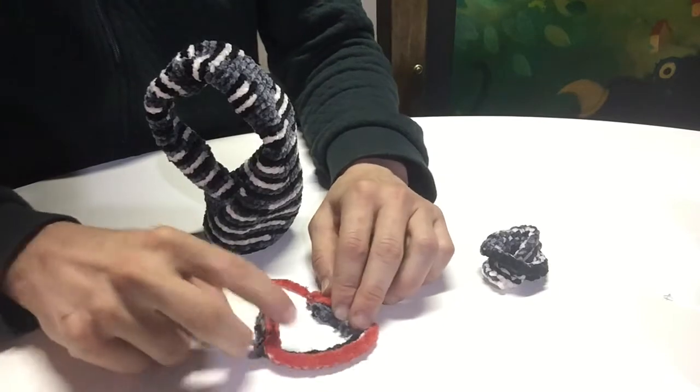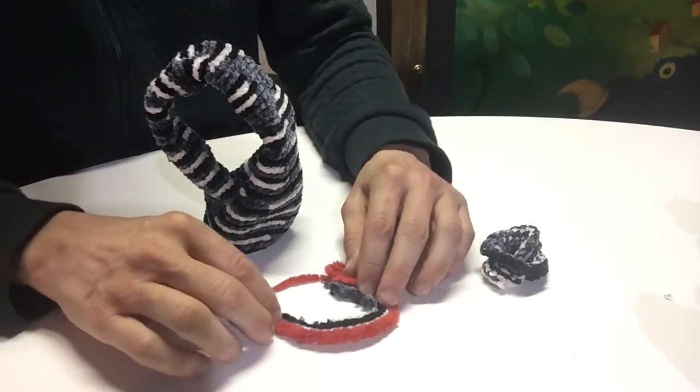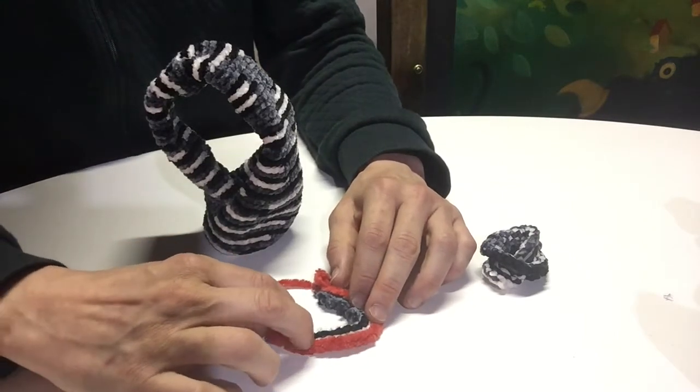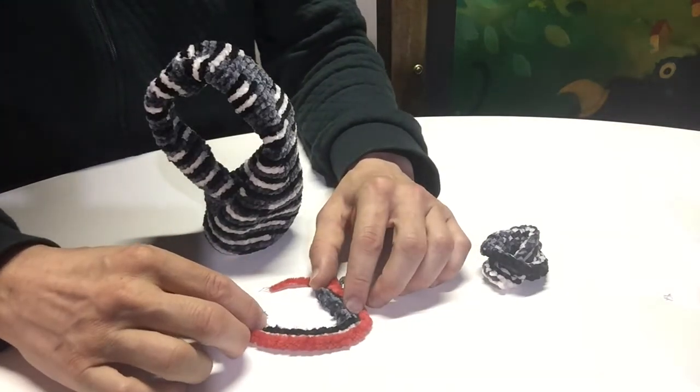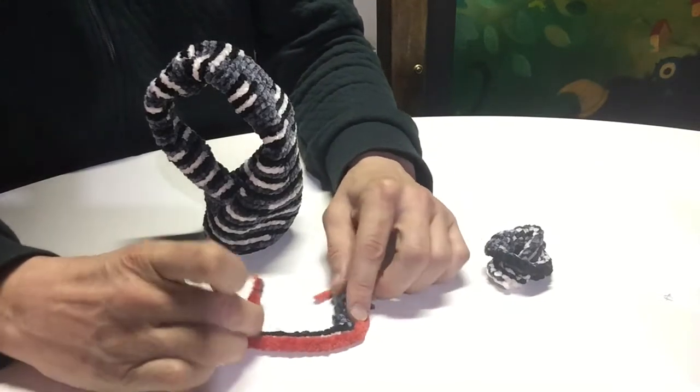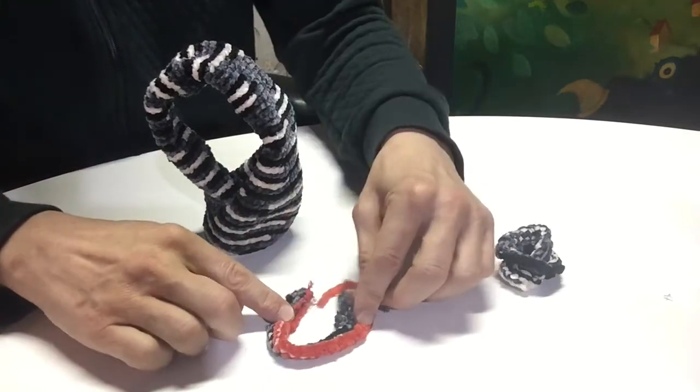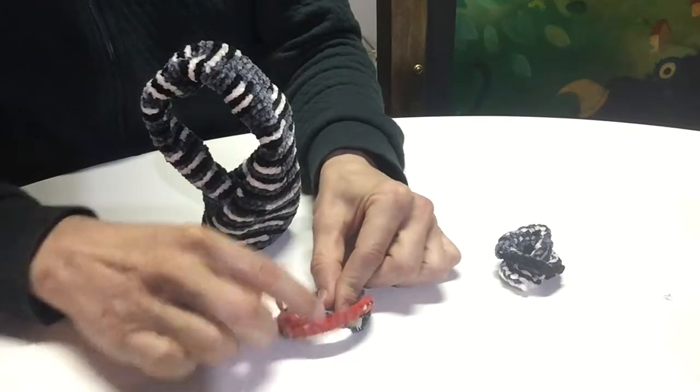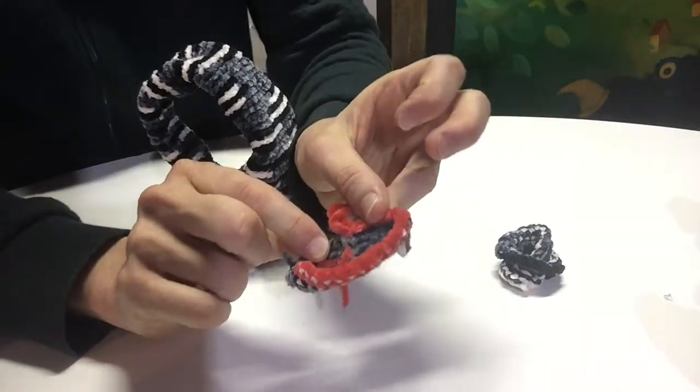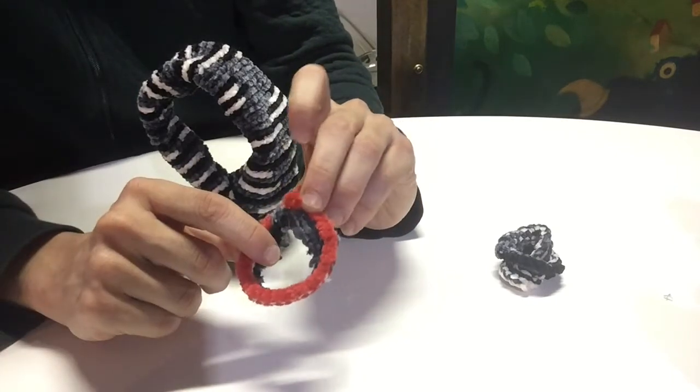This can't happen if it stays flat in the two dimensions. That's why we say it curves through the third, because it has to lift off the table in order to twist and then put the other side, the red side, down on the table and connect.